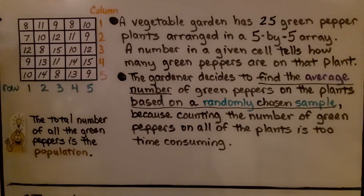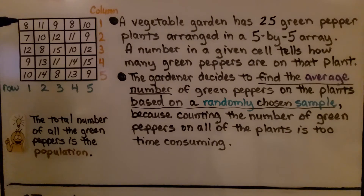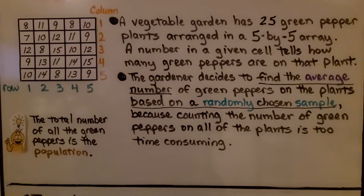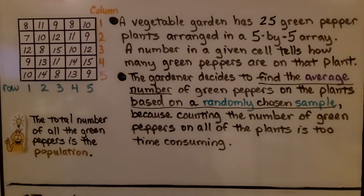Take a look at this diagram. We've got five numbers coming across and five numbers coming down. A vegetable garden has 25 green pepper plants arranged in a 5 by 5 array, so each of these squares is one pepper plant. The number in a given cell tells how many green peppers are on that plant. The gardener decides to find the average number of green peppers based on a randomly chosen sample, because counting all the plants is too time consuming. The total number of all green peppers is the population.